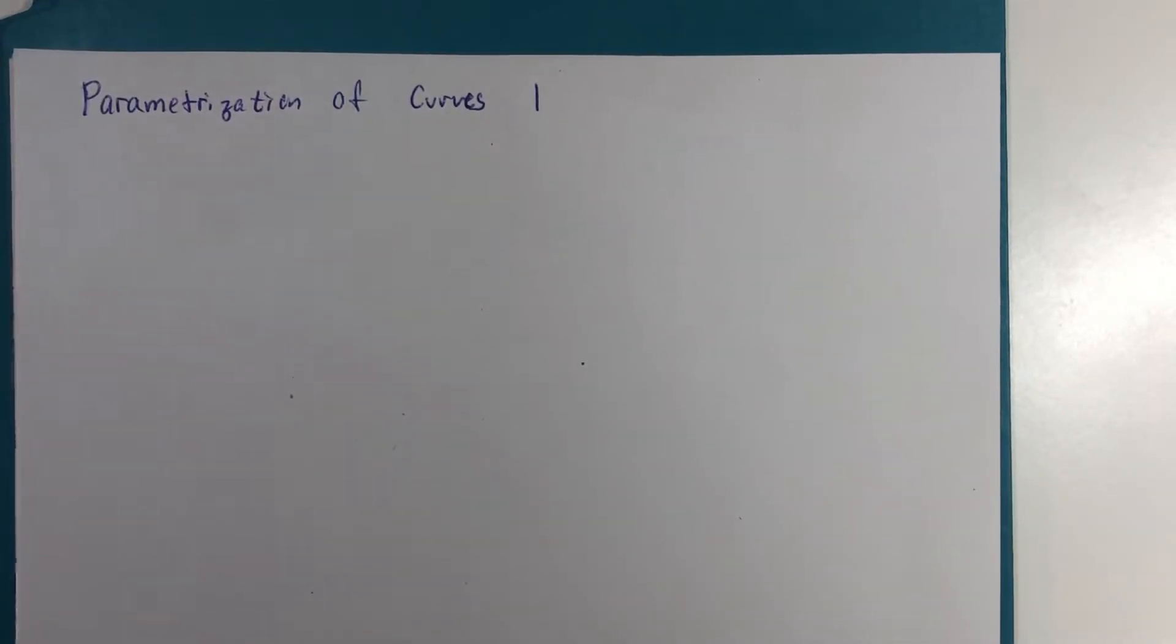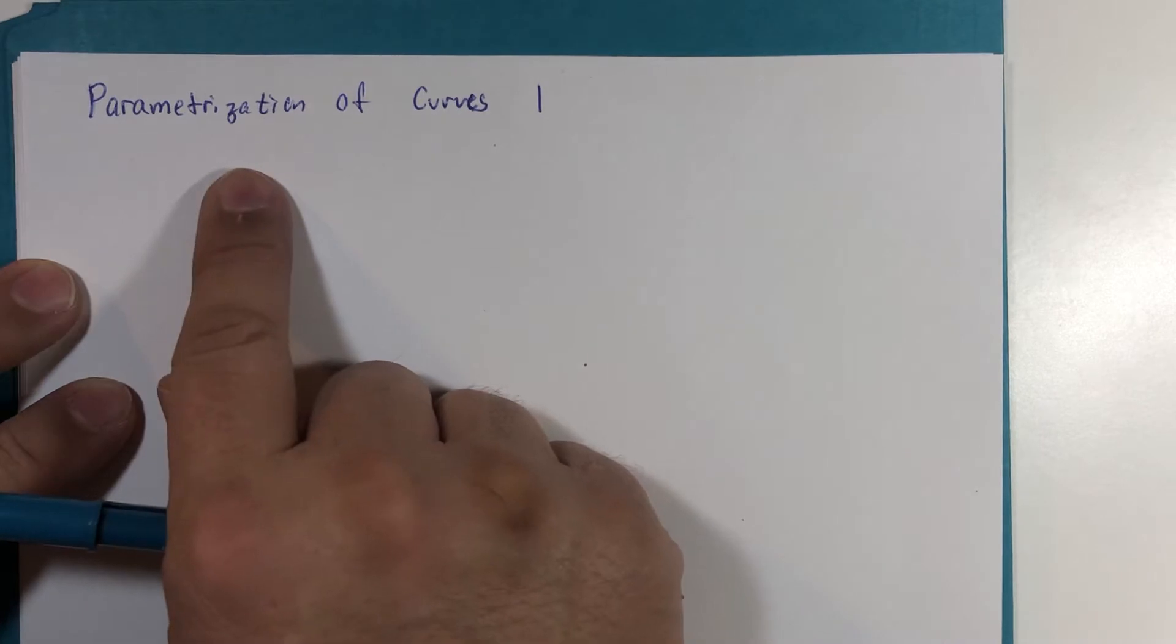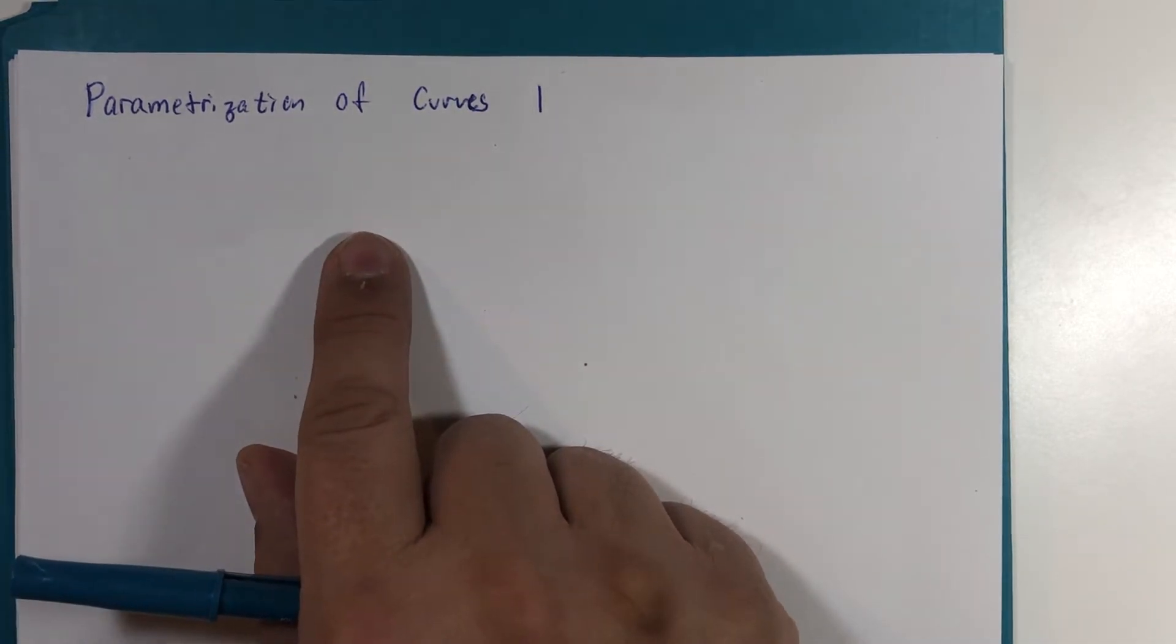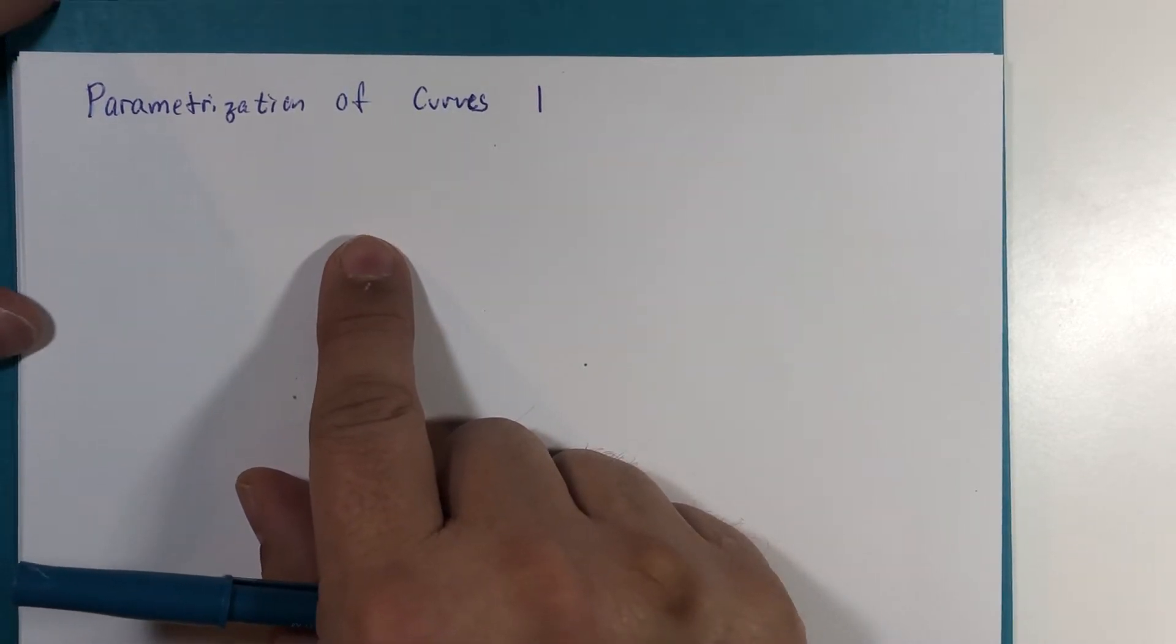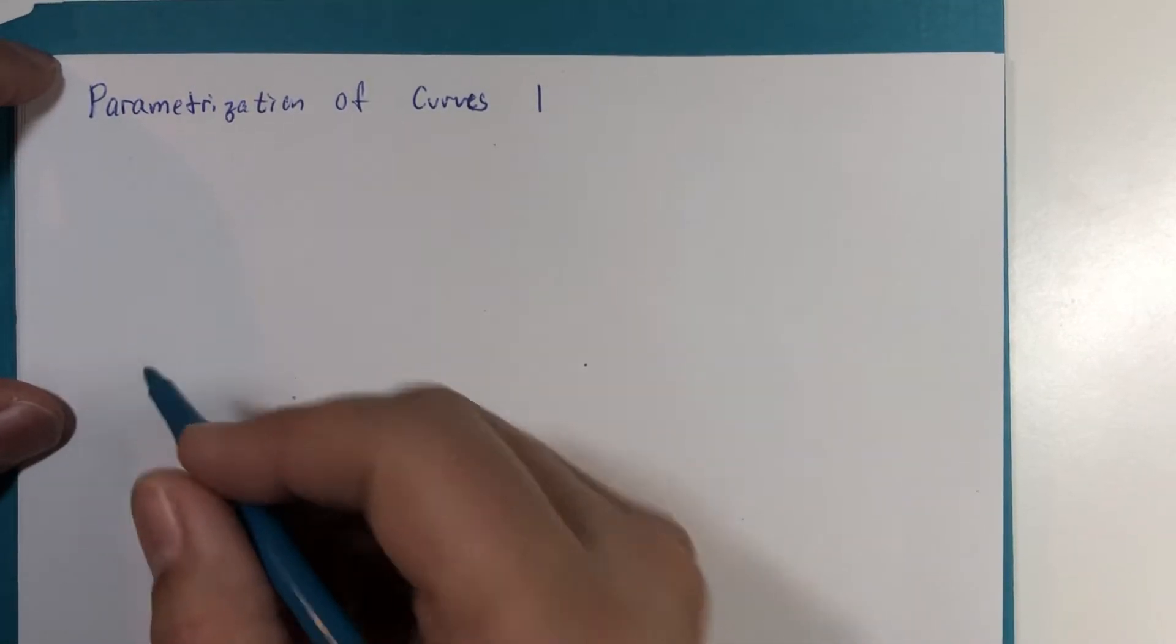So this next little topic that I'm going to have more than one video segment on is not really calculus. It's really a branch of pre-calculus, and it's a topic that we covered earlier in the semester in this multivariable calculus class, but not under this name. Parametrization of curves, and the idea is to take something that is in more than one variable and write it in fewer variables.